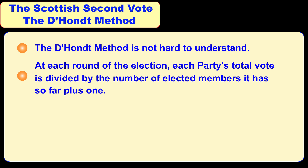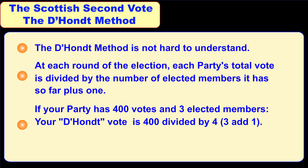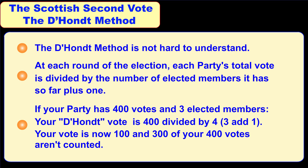At each round of the election, each party's total vote is divided by the number of elected members it has so far, plus one. If your party has 400 votes and 3 elected members, you add 1 onto the 3 giving you 4, so your D'Hondt vote is 400 divided by 4 — the 3 plus 1. 400 divided by 4 gives you 100, so your vote is now 100, and 300 of your 400 votes aren't counted.